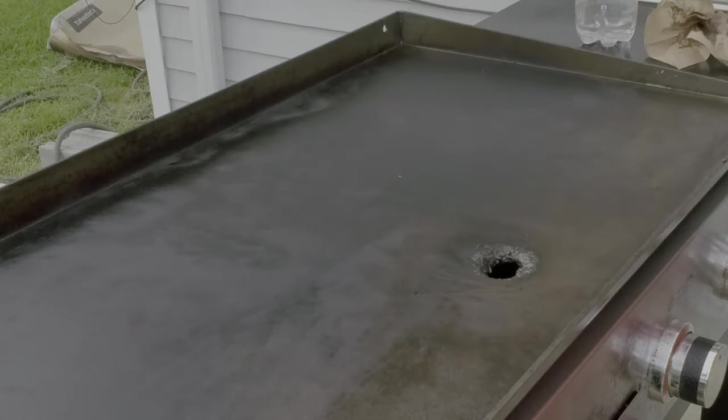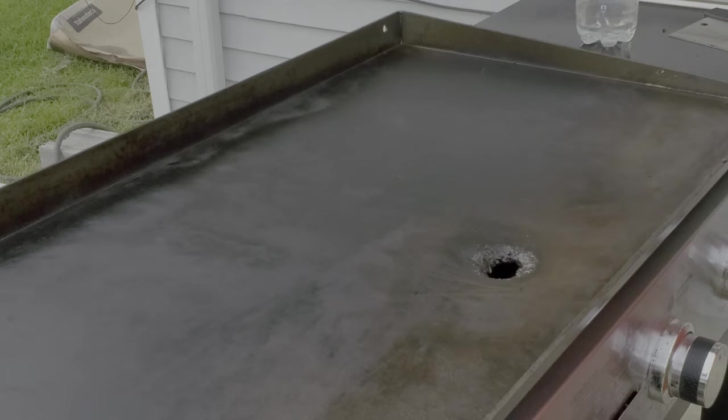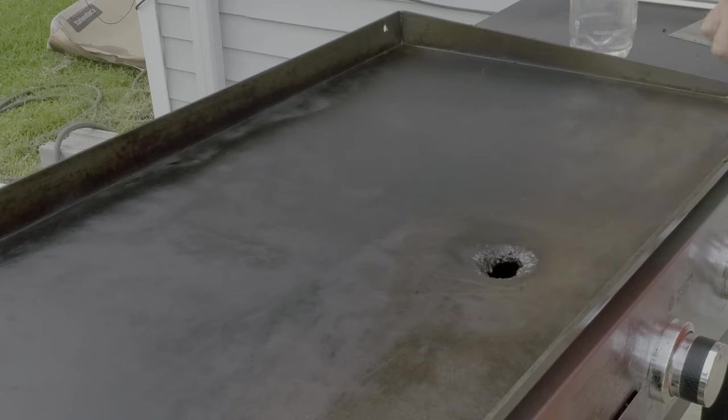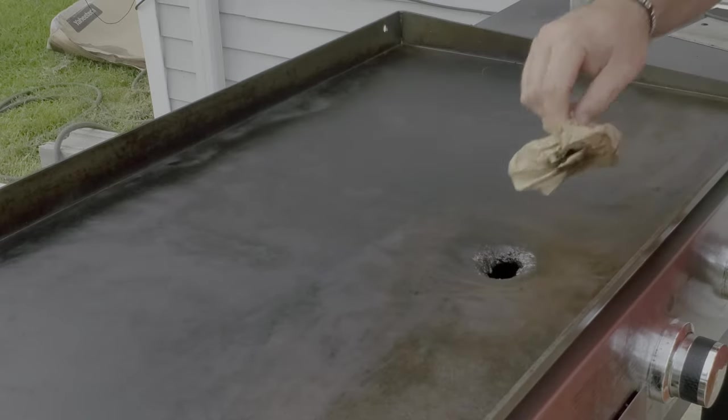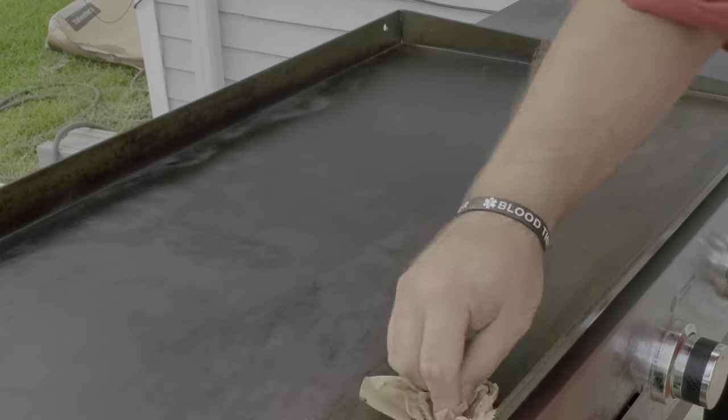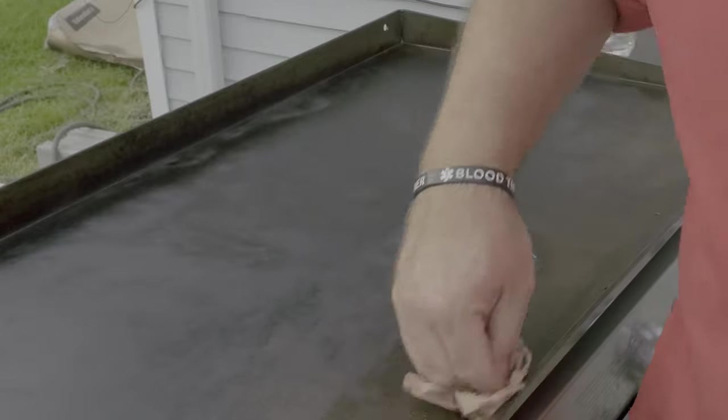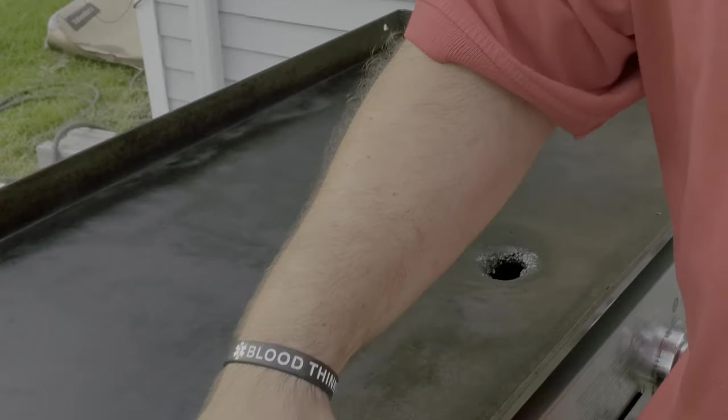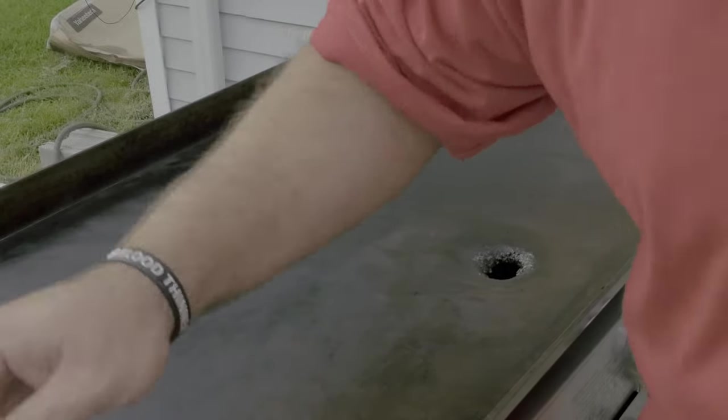So that's got the griddle sort of cleaned off. All the big debris gone. So now what I'll do is I'll just start taking paper towels and just sort of wiping up the excess debris and oil that sort of settles there in the corners where I can't get it with the scraper that well.